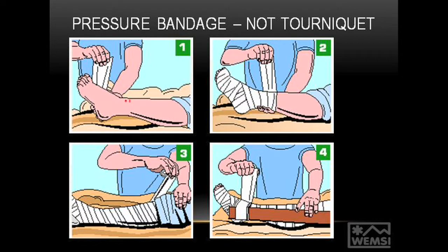We talk about keeping the leg as still as we can and applying a pressure immobilisation bandage — about the same tightness as you'd put on a sprained ankle. The aim is to keep the soft tissues compressed to stop that lymphatic spread, while keeping the blood flowing. Once you've done that and kept the patient calm and quiet, we really need to get them to somewhere that has antivenom. Antivenom is very useful and in some parts of the world very effective.